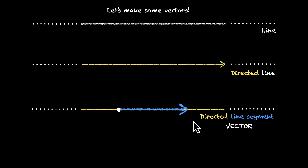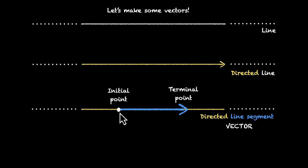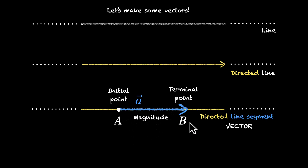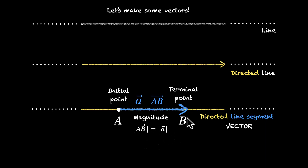A vector has a direction and it has a length. If it's moving from this point to this point, we call this the initial point and this is the terminal point — the terminal point is where the vector ends. The initial point is where the vector begins, and this length is called the magnitude. We usually name vectors with small letters — we can say this is vector a. Or if we're labeling initial and terminal points, if this is point A and this is point B, we can say this is AB vector, meaning we start from A and end at B. The magnitude is written as mod AB vector or mod of A vector.